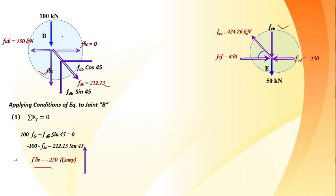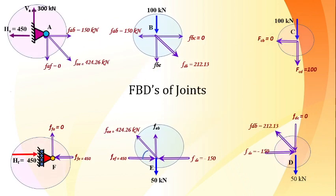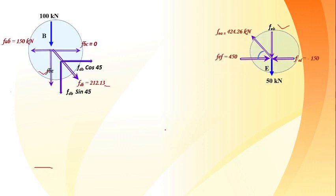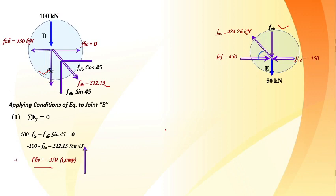We can also check joint E: applying sigma Fx = 0: +450 - 150 - 424.26 × cos45 = 0. Left-hand side equals zero, confirming equilibrium. Applying sigma Fy = 0 at joint E also satisfies the condition. This random check confirms that all previous joint analyses were done correctly.